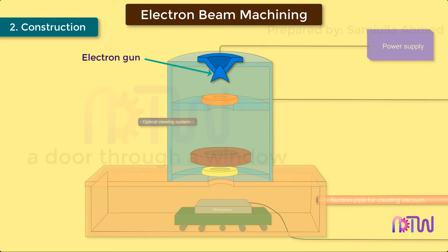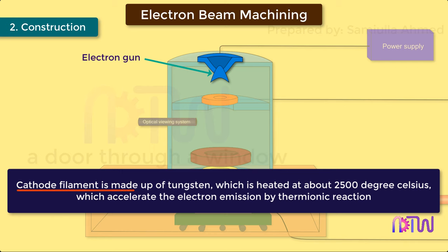Electron gun: It is a cathode ray tube, which generates the electrons, accelerates them at a very high speed, and focuses on the required spot on the workpiece. Cathode filament is made up of tungsten, which is heated at about 2,500 degrees Celsius, which accelerates the electron emission by thermionic reaction.